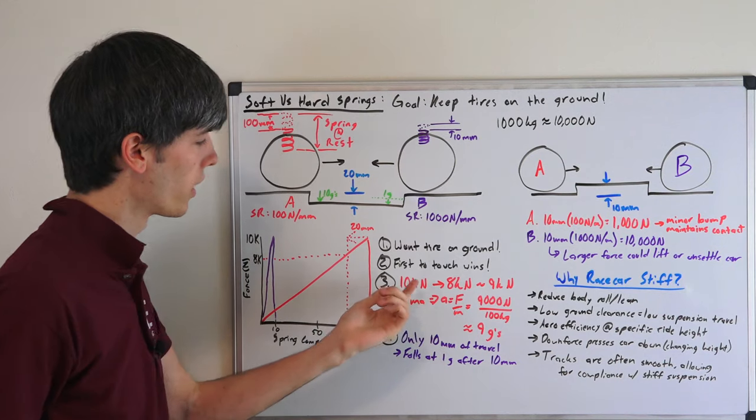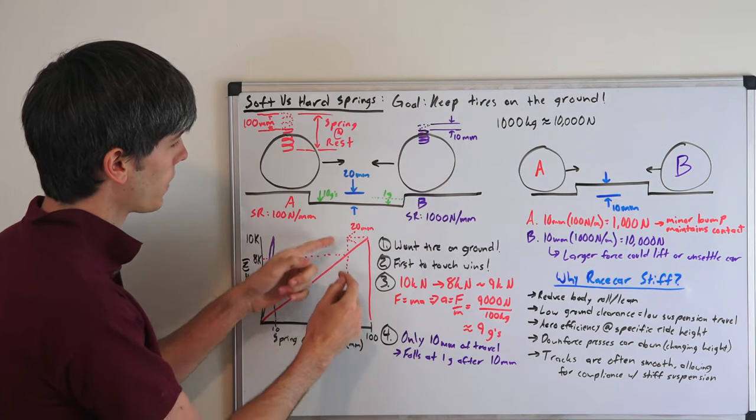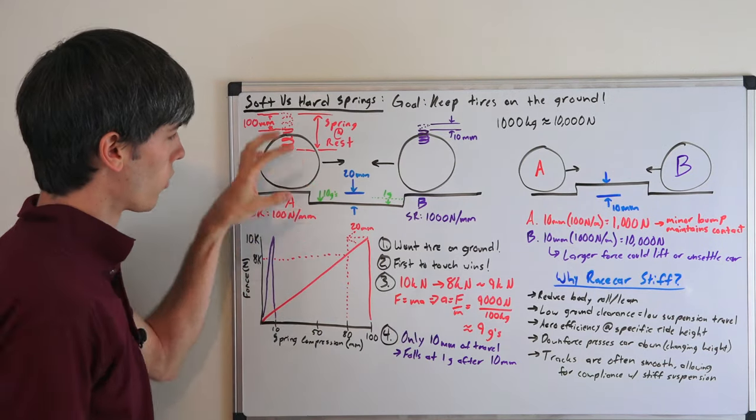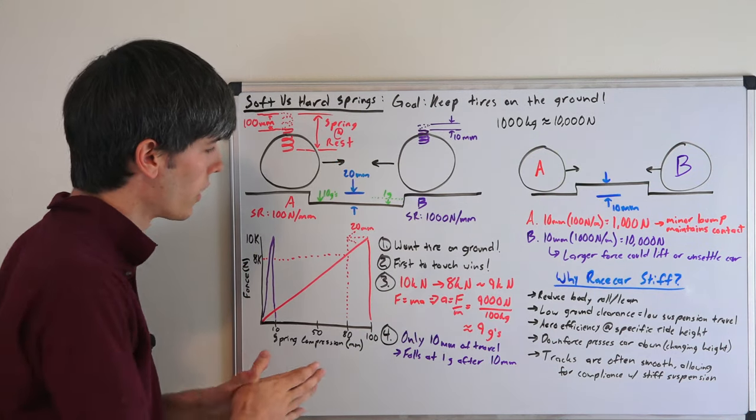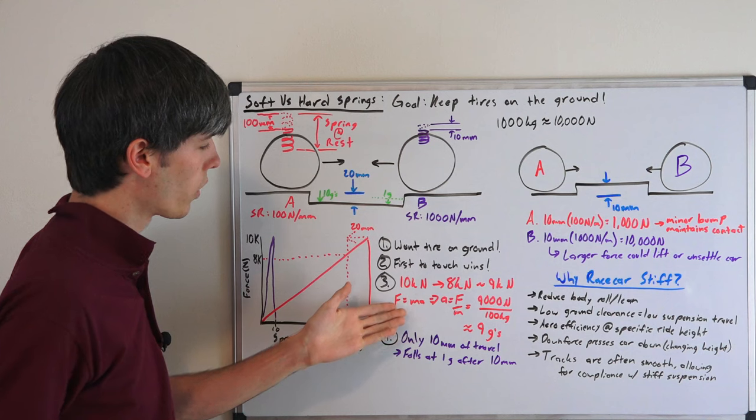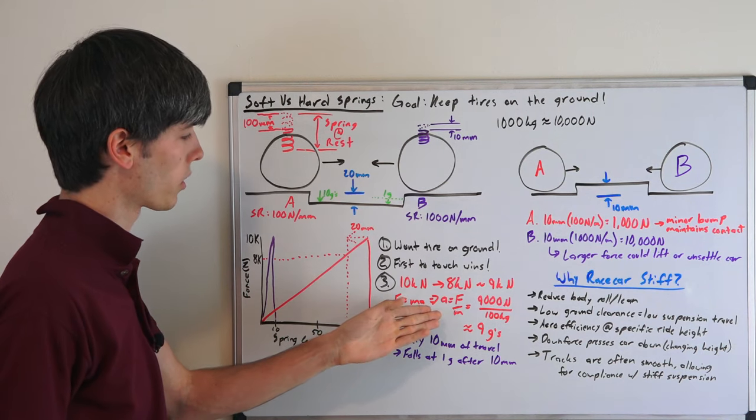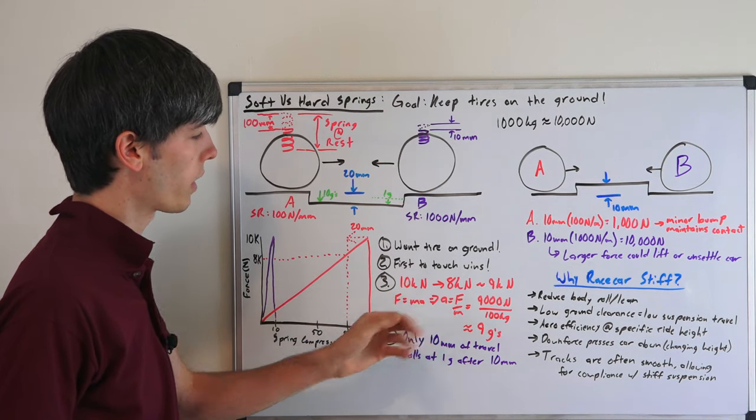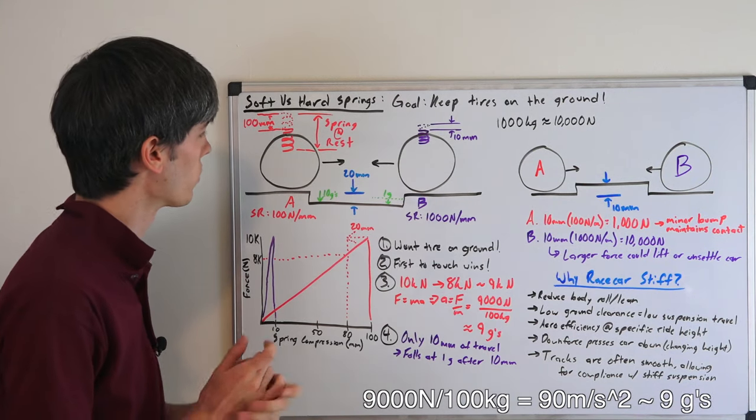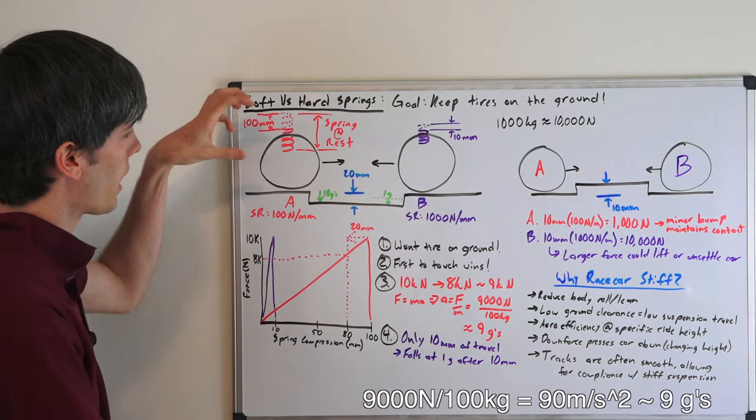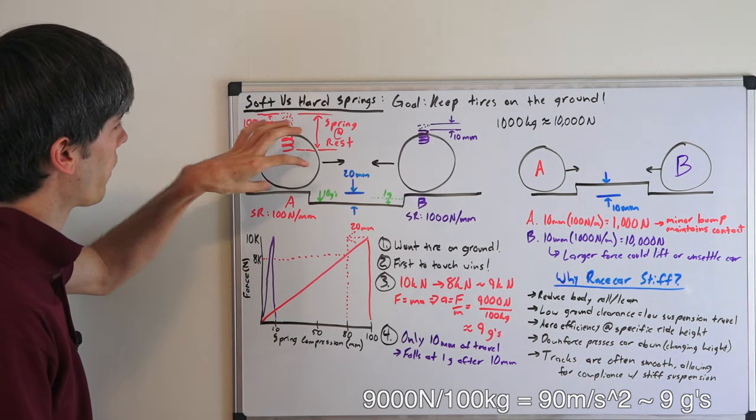So if we take the average of those 10,000 newtons at the start, 8,000 newtons pressing down at the end, right when it hits contact, we've got an average of about 9 kilonewtons, 9,000 newtons. So we know that force equals mass times acceleration. Acceleration equals force divided by mass, 9,000 divided by a hundred kilograms. That's the mass of the wheel.